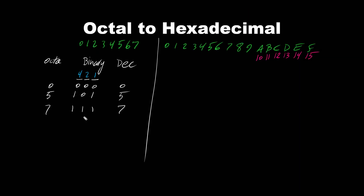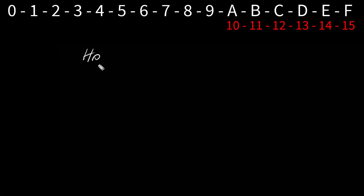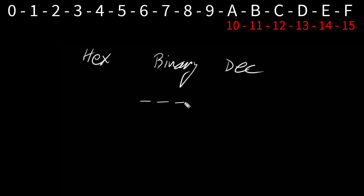Now let's look at hexadecimal — why we have 4 bits for every hex digit. The 4-bit decimal values are 1, 2, 4, 8, again coming from 2 to the power of bit position: bit positions 0, 1, 2, and 3.